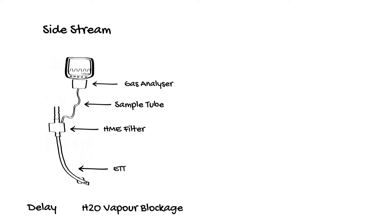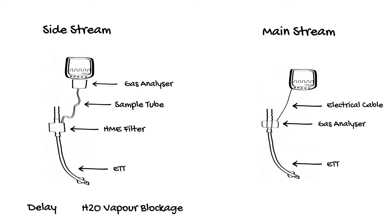Main stream analysers require the sampling chamber to be in close proximity to the endotracheal tube. This makes it bulky at the patient end but dramatically reduces the reaction time of the monitor. Main stream analysers are heated to above body temperature to prevent the window from fogging. On early generations, this could cause skin burns with prolonged patient contact but this doesn't occur with later generations.